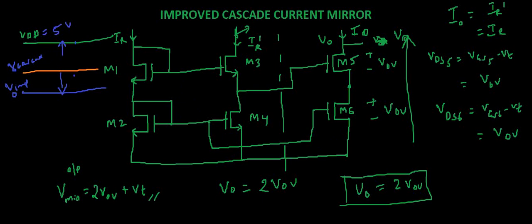These are the benefits of using improved cascade current mirror. There is one more circuit. Instead of adding M5 and M6 in the original circuit itself, we can add a battery. You can look it up for that circuit. If you add a battery here with voltage VT,